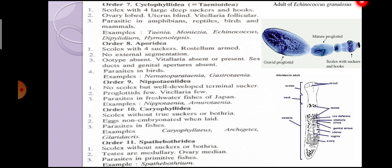Next order is Order Caryophyllidea. The scolex has no true suckers or bothria. Eggs are non-embryonated when laid. They are parasites in fishes. Then the last order is Order Spathobothriidea. The scolex is without suckers or bothria. Testes are medullary and ovary is median. They are parasites in primitive fishes. Example is Spathobothria.